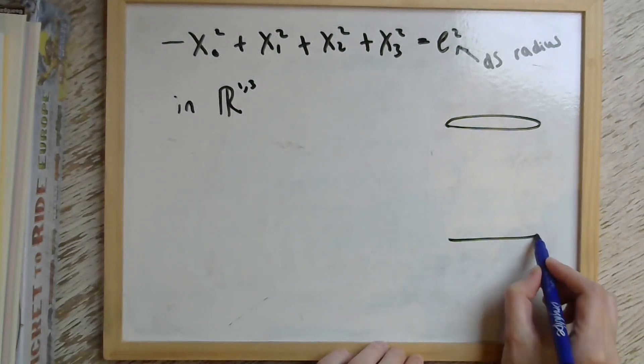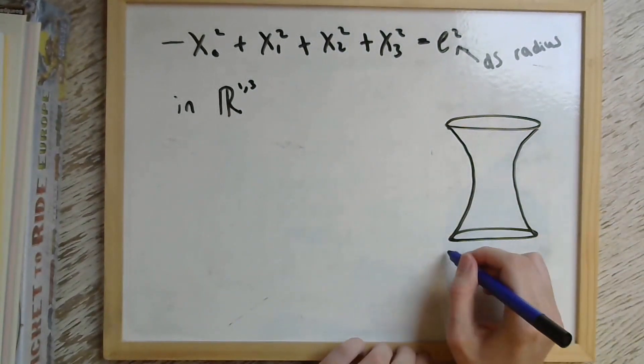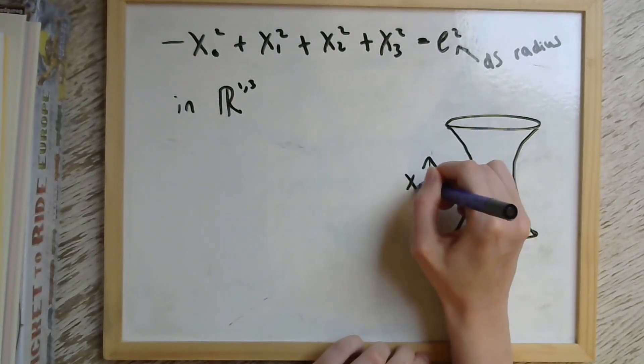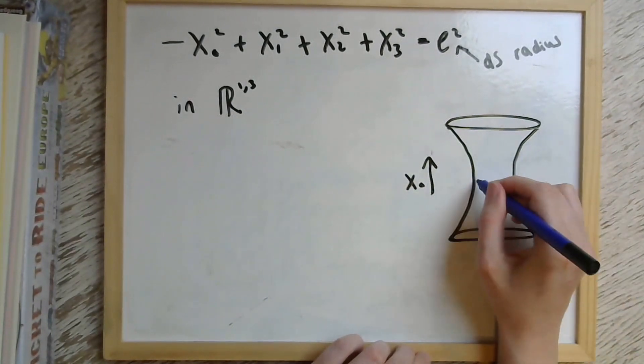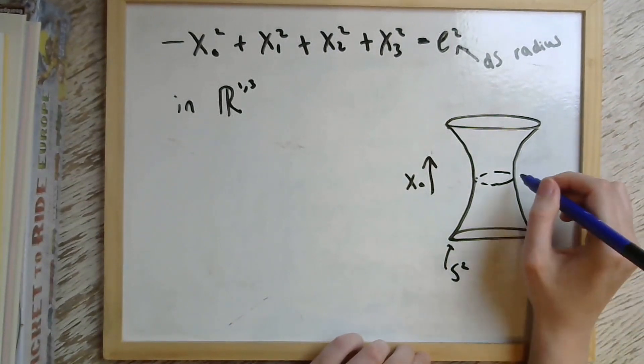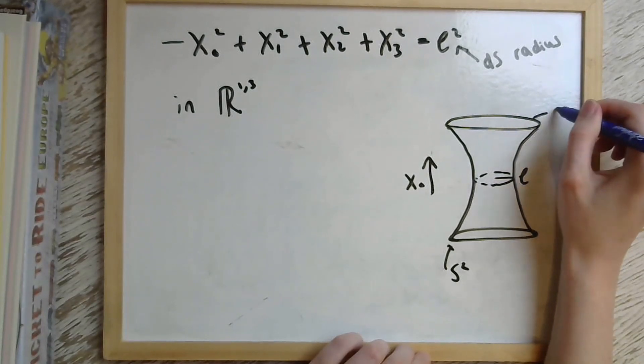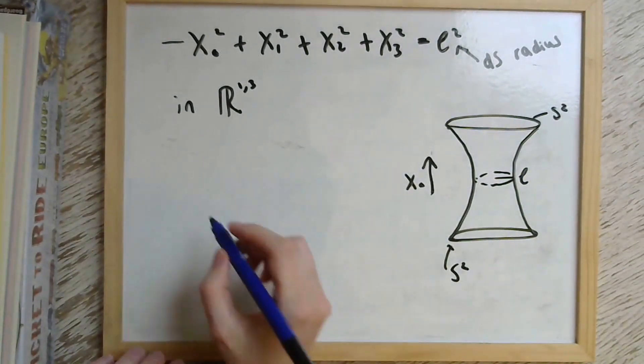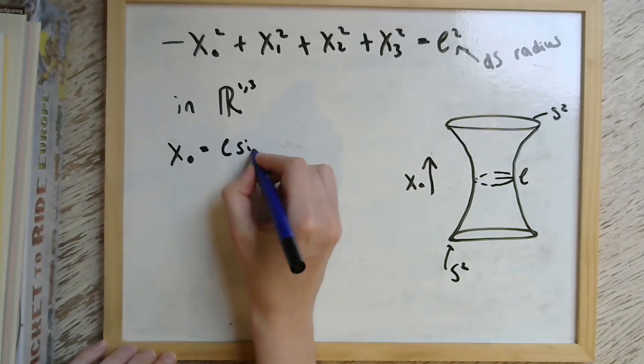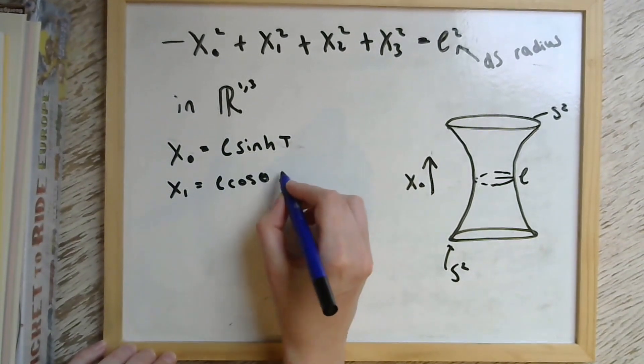So constant time slices here in this hyperboloid look like two spheres. So we've got a time direction, which is X₀ going upwards here. And each constant slice is a two sphere. So these two spheres start at infinite radius. They shrink down to the de Sitter radius and then they grow again to infinite radius in the far future. Now we can pick some specific coordinates to describe this hypersurface, such as these ones, for example.